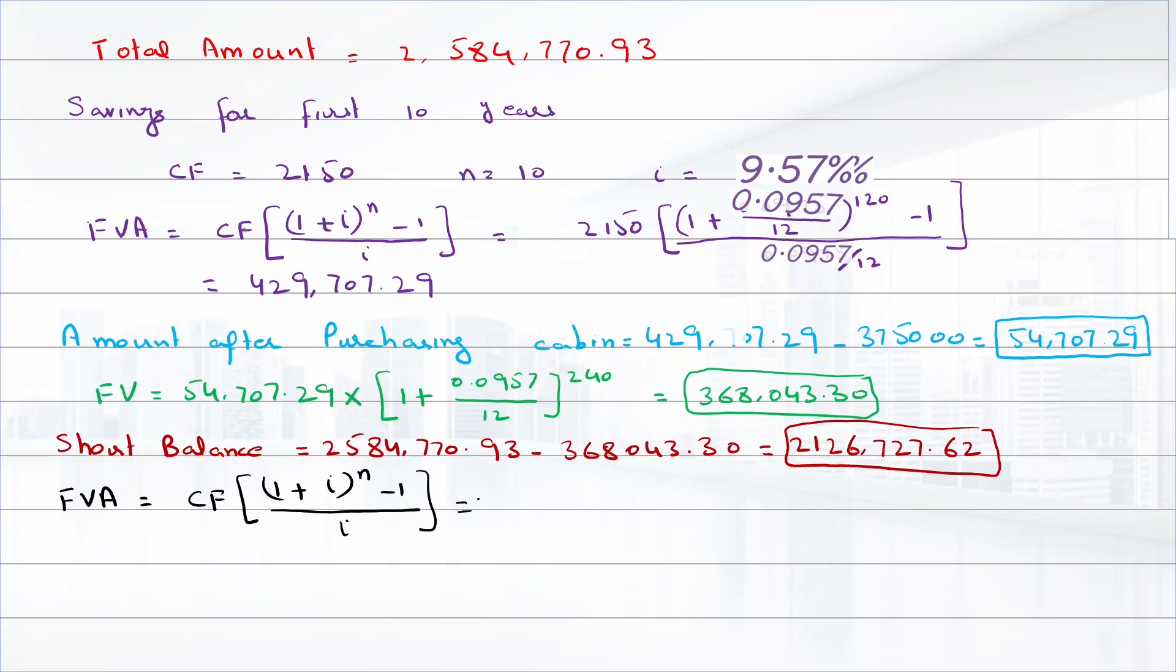Future value of annuity will be $24,716,727.62, which equals cash flow times [(1 + 0.0957/12)^240 - 1]/(0.0957/12). So the cash flow will be $3,086.25.